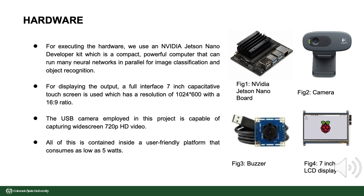The hardware used for this project includes an NVIDIA Jetson Nano Developer Kit, which is a compact, powerful computer that can run many neural networks in parallel for image classification and object recognition. For displaying the output, a full-interface 7-inch capacitive touch screen is used, with a resolution of 1024x600 and a 16:9 ratio. The USB camera employed is capable of capturing widescreen 720p HD video. All of this is contained inside a user-friendly platform that consumes as low as 5 watts.